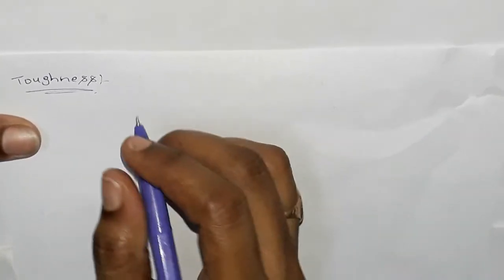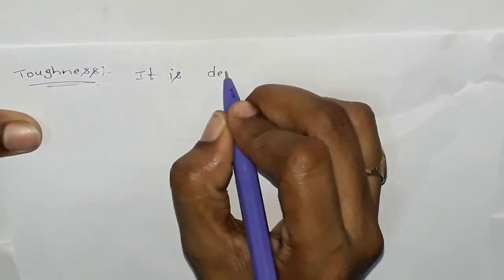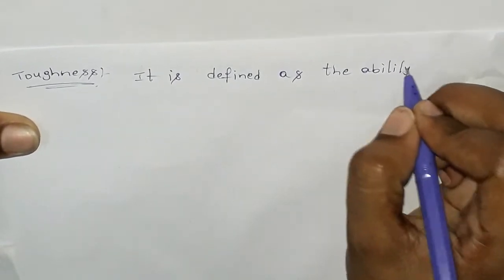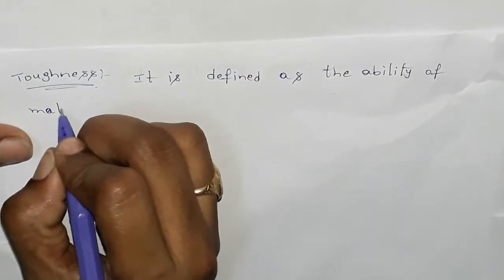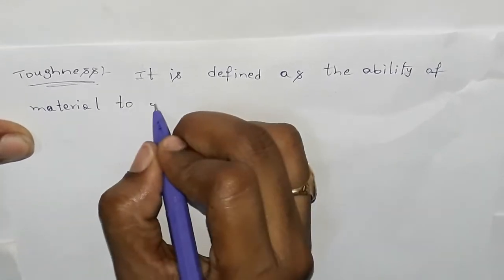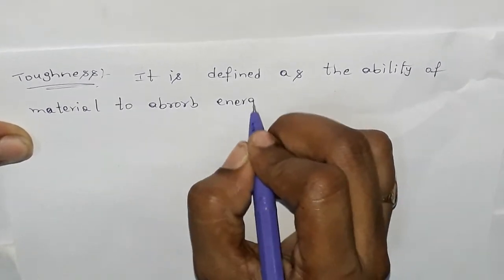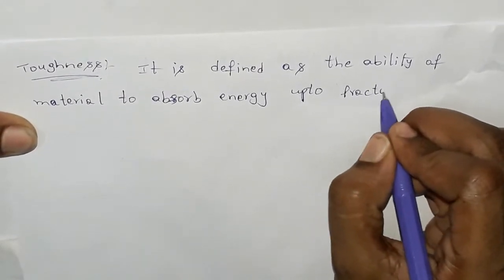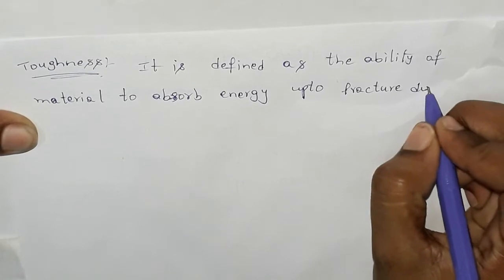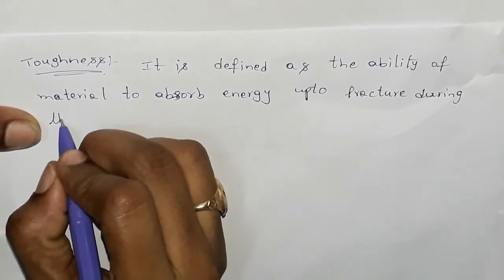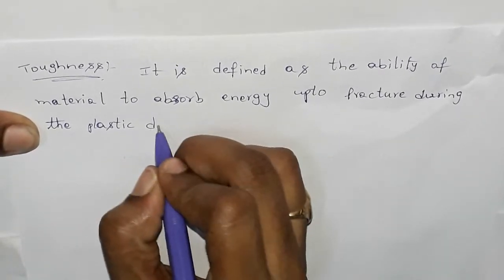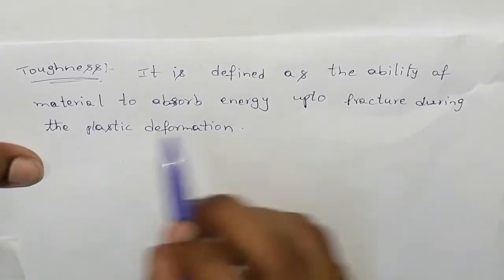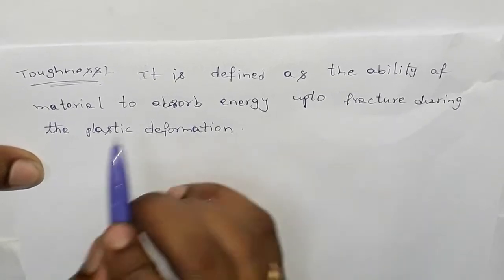The first one is toughness. Toughness is defined as the ability of a material to absorb energy up to fracture during plastic deformation.